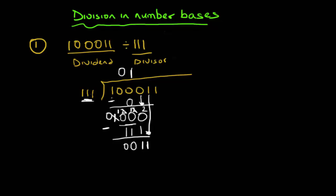Now I have '11' compared to '111'. '11' has only two digits, so it's smaller — I put zero on top. Zero times '111' gives zero. I subtract and bring down, getting '011', then bring down the last digit, one, giving me '111'.